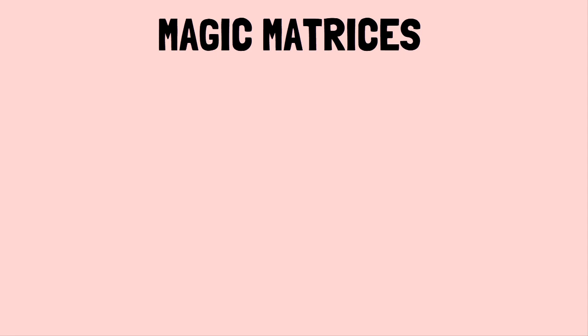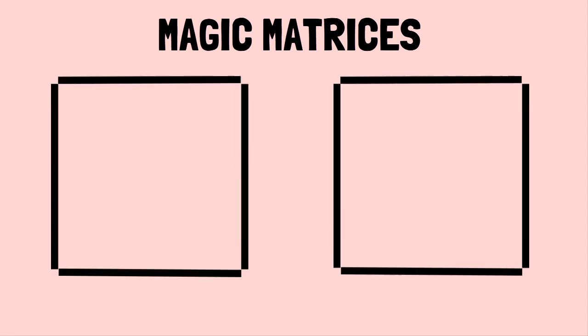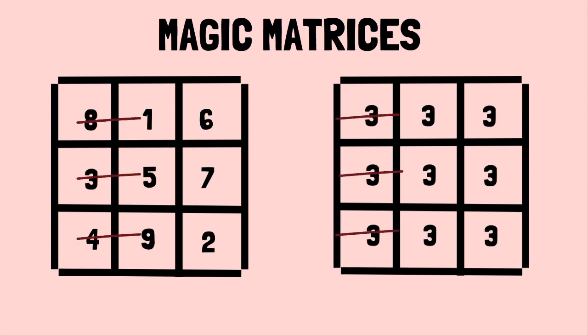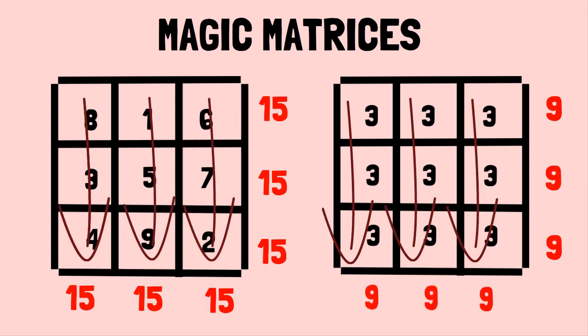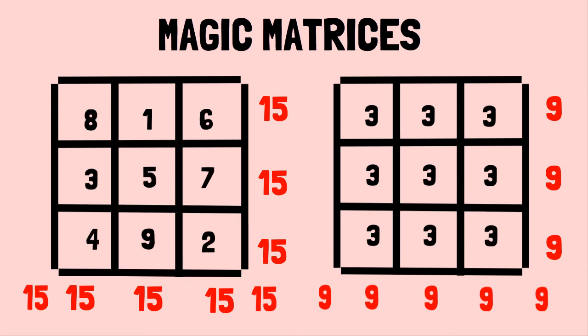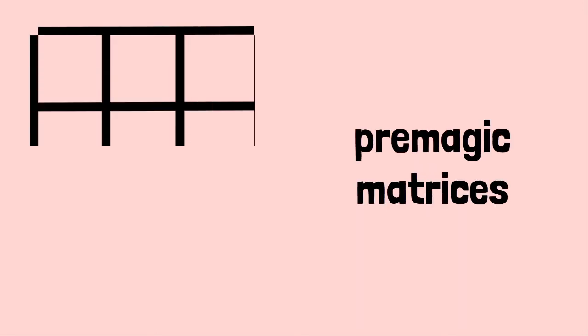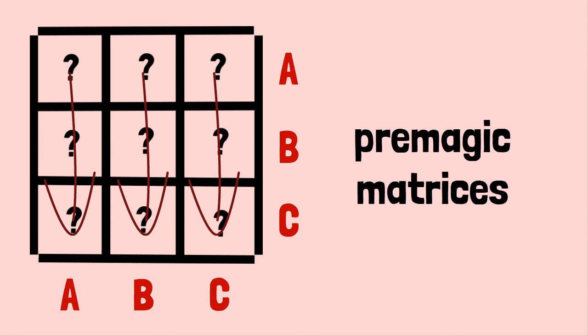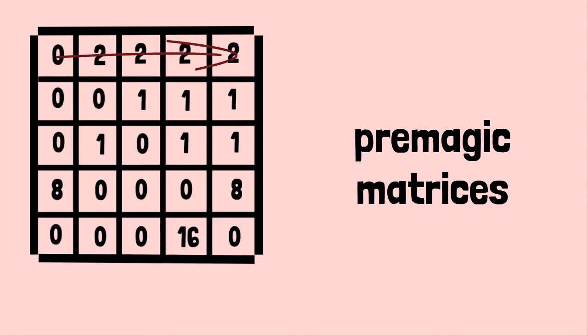Magic matrices are these square matrices, for example, a 3 by 3 square, where it adds up the same number whether you add the rows, the columns, or diagonally. P-magic matrices are similar. They're a square matrix where the vector row sum is equal to the transpose of the vector column sum. If you add this, it's A. Here, it's also A.